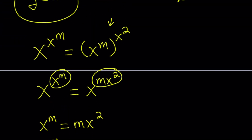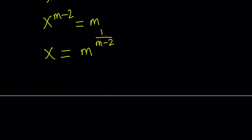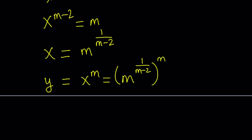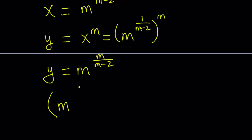Now, how do you find the y values? Remember, we assumed that y equals x to the power m. So just by raising x to the power m, we get the y value: y equals m to the power 1 over m minus 2, all raised to the power m, which gives y equals m to the power m over m minus 2. So we can write our solutions as the ordered pair: m to the power 1 over m minus 2, comma, m to the power m over m minus 2.